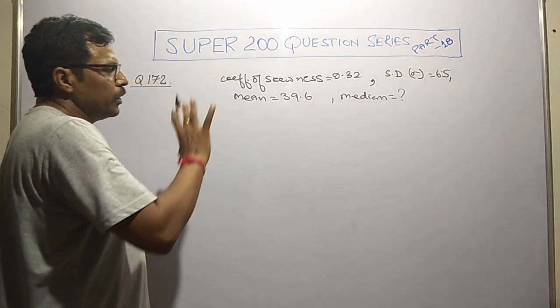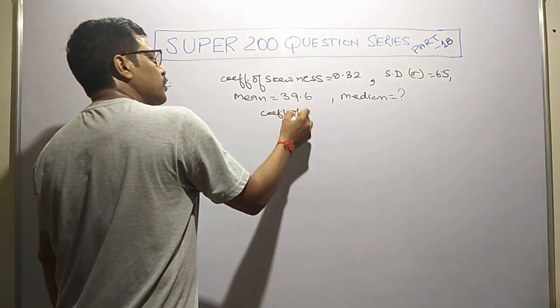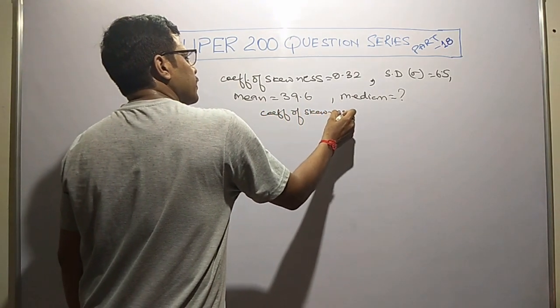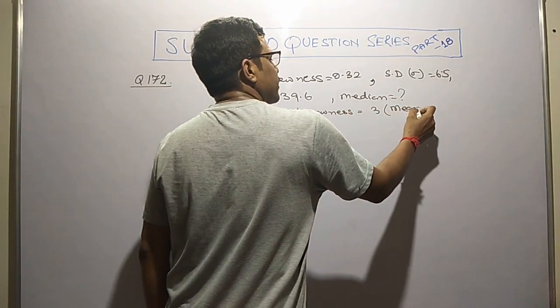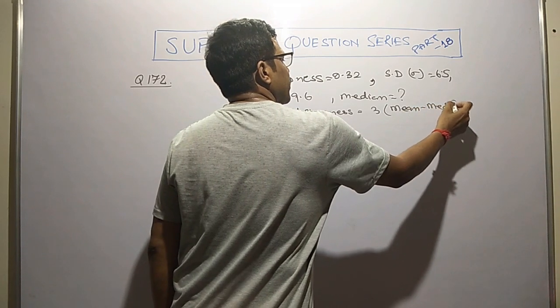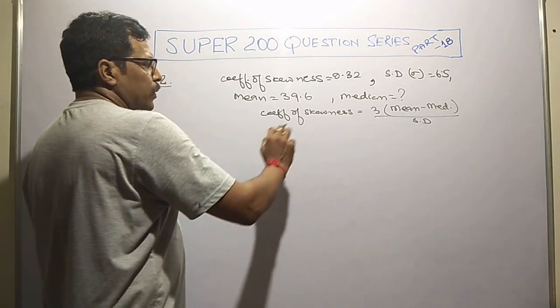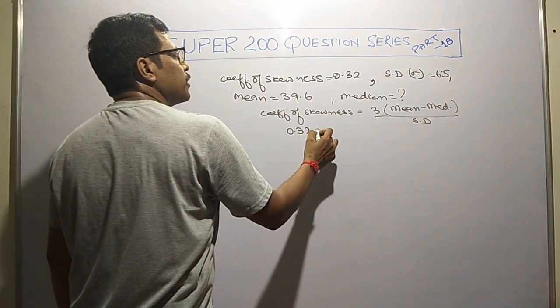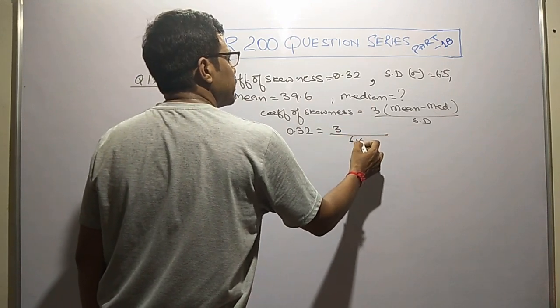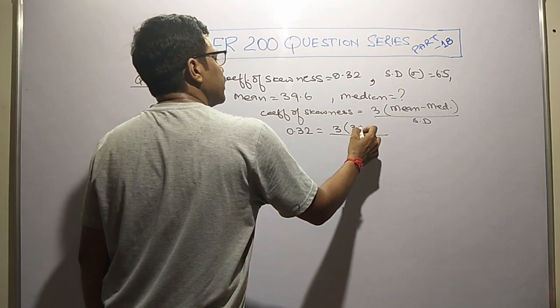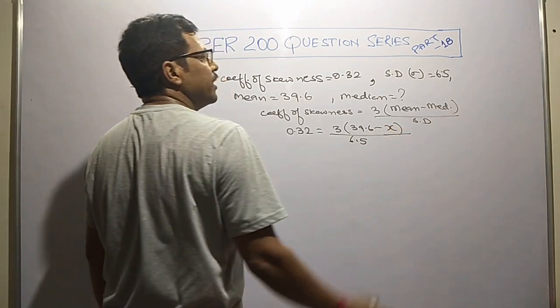To get median, we need to know the relation: coefficient of skewness equals 3 times mean minus median divided by standard deviation. Whatever we know, just put in the concerned values. 0.32 equals 3 over 6.5 times 39.6 minus median. Let median be x.